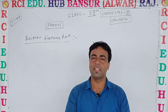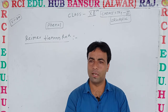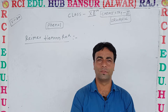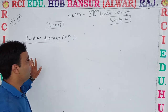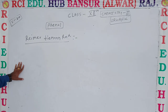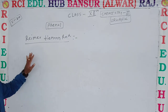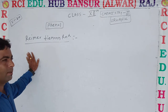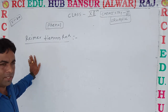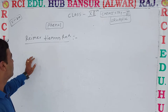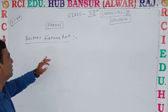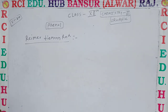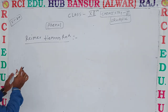Welcome dear students in RCA Education Hub online classes. Today we study phenol chemical properties — next benzene part reactions. That is the Reimer-Tiemann reaction, which is a very important reaction.